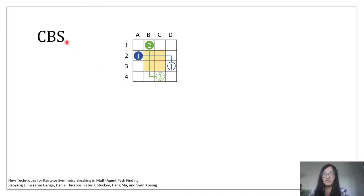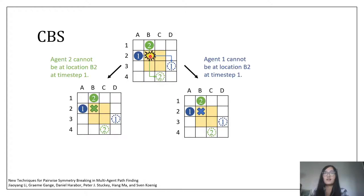Now let me give you an example about how these strategies work and how the symmetry looks like. CBS is an optimal MAPF solver. It first plans a shortest path for each agent by ignoring other agents. Like here, these two shortest paths collide at location B2 at time step 1. To resolve this collision, CBS says that either agent 2 cannot be at location B2 at time step 1, or agent 1 cannot be at location B2 at time step 1. In each case, it replans new paths to satisfy the new constraints. Like here, we plan for agent 2, and here we plan for agent 1, and then check for collisions again.